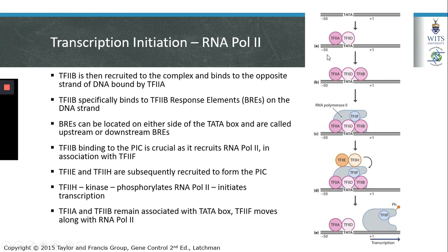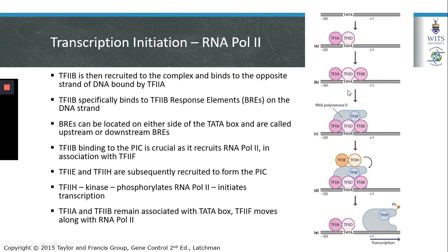After binding of TF2A and TF2D to the TATA box, transcription factor 2B is recruited to the complex. TF2B has been shown to bind to the opposite strand of DNA from that bound by TF2A. There are specific sequences located on either side of the TATA box called transcription factor 2B response elements, or BREs, which serve as binding sites for TF2B. BREs may be located on one or both sides of the TATA box and are referred to as upstream or downstream BREs based on their position.